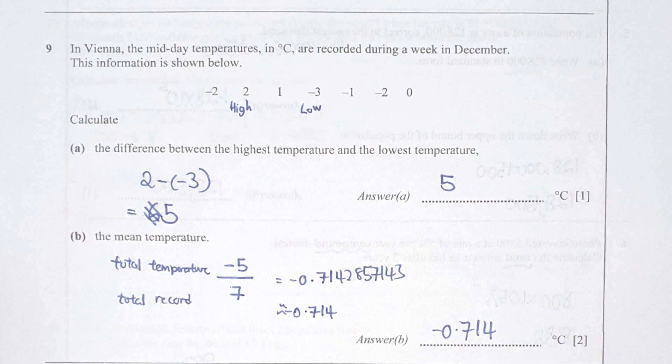For question 9, find the difference between the highest and the lowest temperature. The highest is 2 degrees Celsius and the lowest is negative 3, so the difference between the temperatures is 5 degrees Celsius.